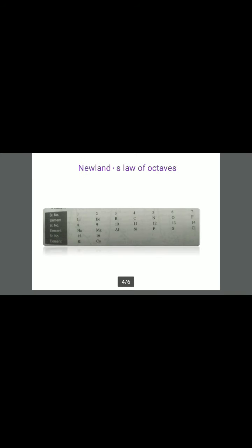Now, Newland's Law of Octaves: when the lighter elements were arranged in order of their increasing atomic weights, the properties of every eighth element were similar to those of the first one, like the eighth note of a musical scale. This generalization was named Newland's Law of Octaves. For example, serial number one is lithium, two beryllium, three boron, four carbon, five nitrogen, six oxygen, and seven fluorine. At the eighth note, that is sodium, sodium will have the same properties as lithium according to Newland's Law of Octaves.